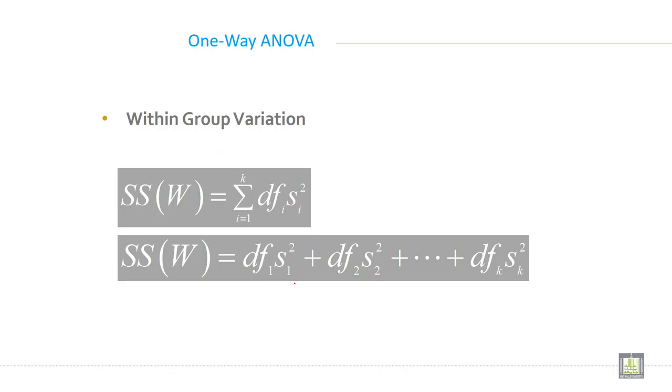Within group variation, the formula is degree of freedom S1 square, degree of freedom S2 square and degree of freedom S square. So to calculate variation within the group, you can use this formula.